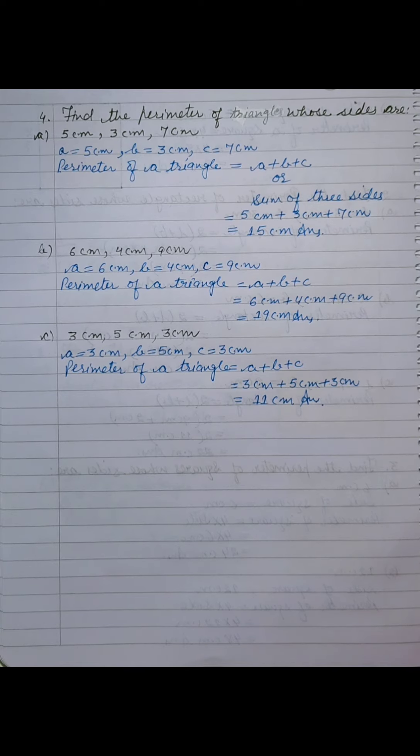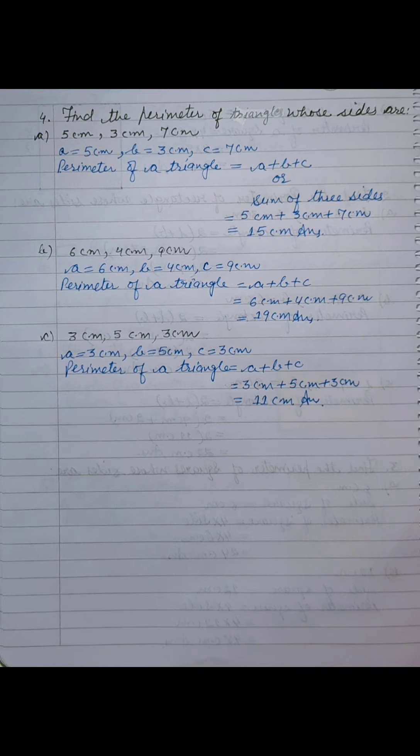Today, we have done perimeter of a rectangle, perimeter of a square, perimeter of a triangle. Right? And sum number 5th is left. So, we will discuss sum number 5th in our live class. Right? With its complete exercise. Okay students, thank you. We will talk to you. Bye.